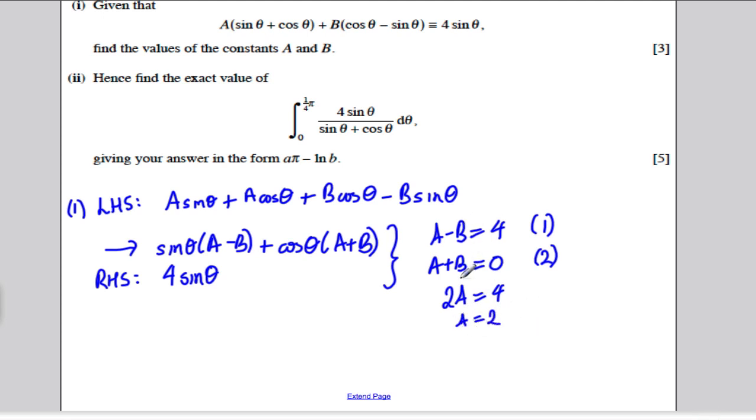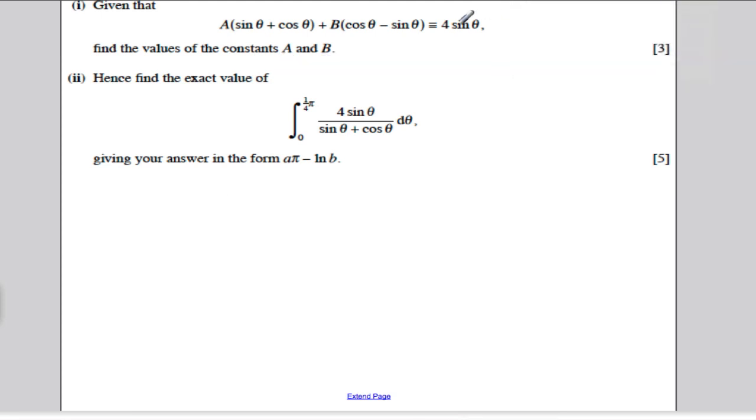Substituting back into either equation, you would simply get that B is negative 2. So finding the values of A and B, A is equal to 2 and B is equal to negative 2.